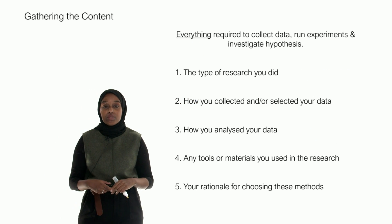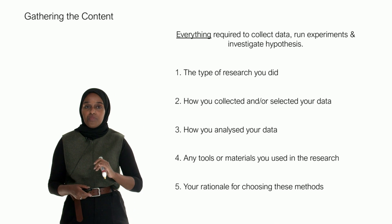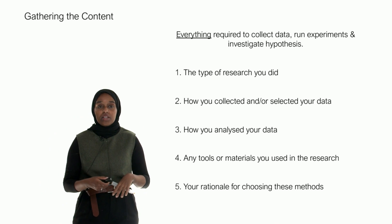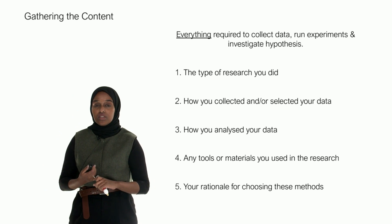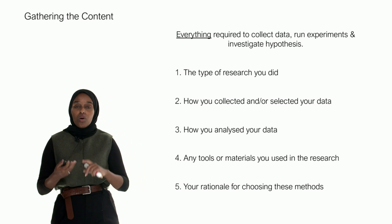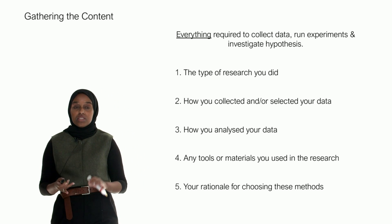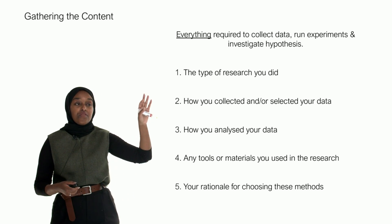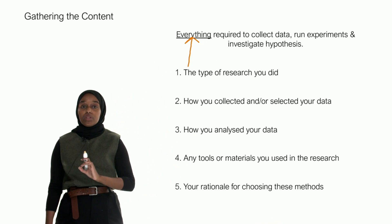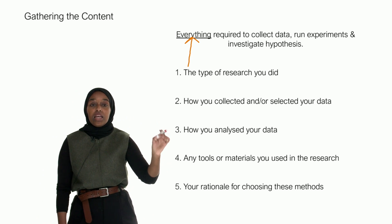To start writing the materials and methods chapter, you need to gather the content. It's everything required to collect your data—everything from what the inclusion criteria is for your interviews, what cell type you use, what concentrations you use, what type of rock you've looked at, every single detail needed to collect your data, run the experiments, and investigate the hypothesis. It's better to go into more detail and give more information than to lack information.